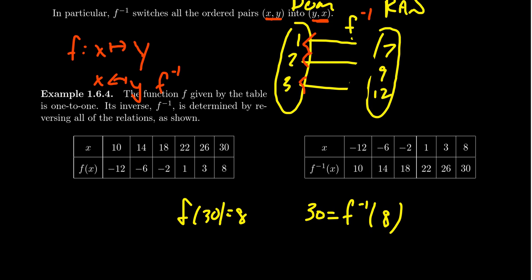And that's what an inverse function does. It just reverses the role of input and output. The input of the function f becomes the output of the inverse function f inverse, and the output of the function f becomes the input of the inverse function f inverse.